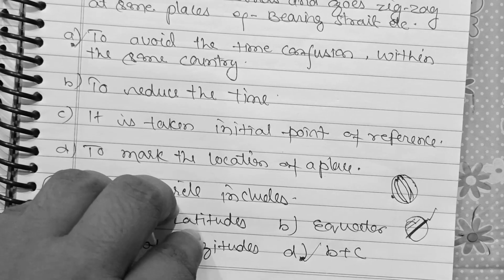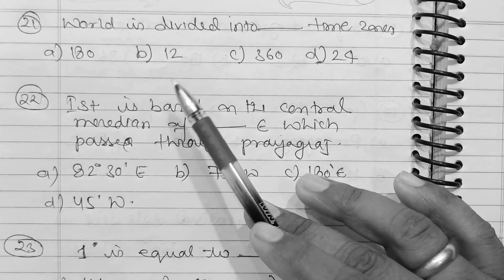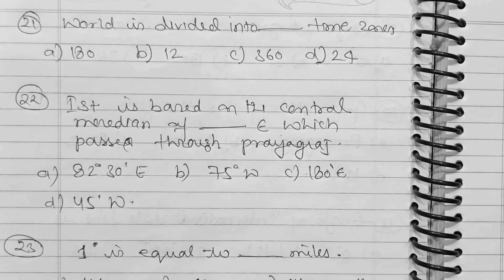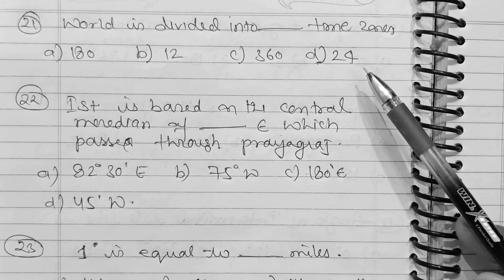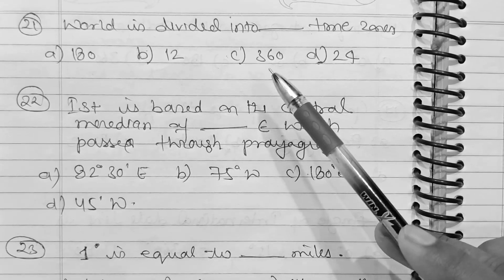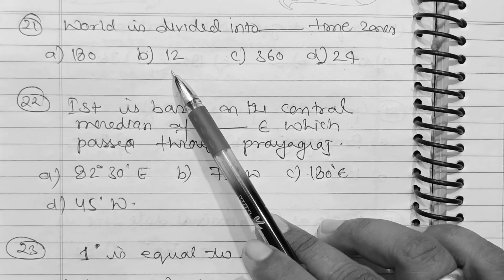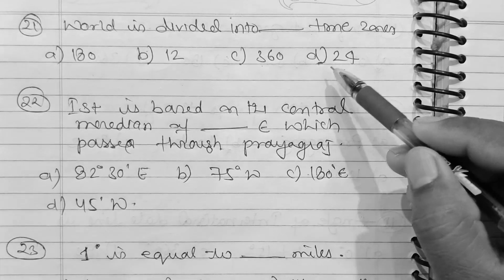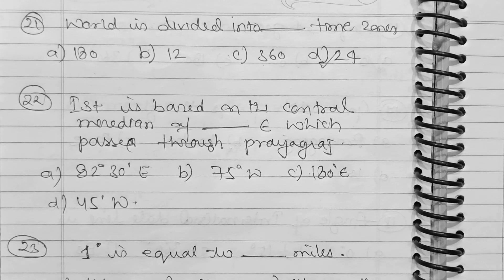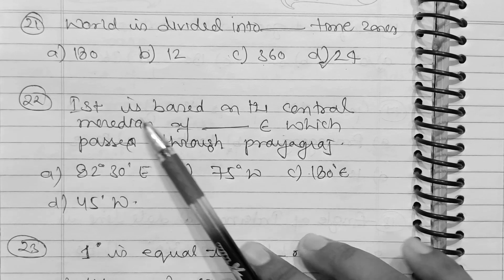Question 21: The world is divided into how many time zones? Option A: 180. Option B: 12. Option C: 360. Option D: 24. The correct answer is 24 — the earth is divided into 24 time zones.